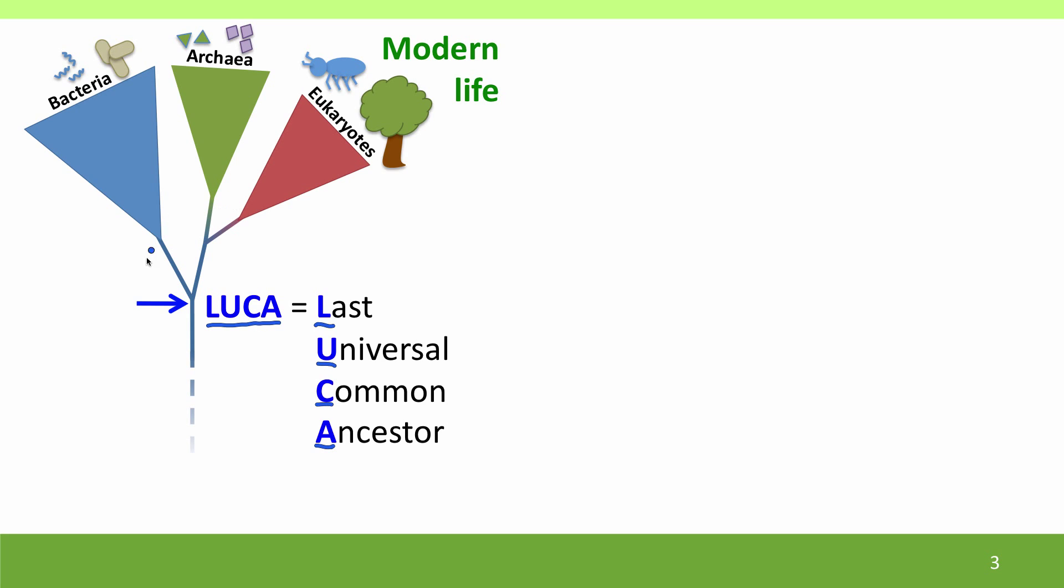Ancestors after this aren't universal, they're only the ancestors of part of the tree. Ancestors before this aren't last. This point marks the time when the last organism existed that was an ancestor of everything that's alive now. We know quite a lot about the properties of this organism by looking at properties of modern organisms.